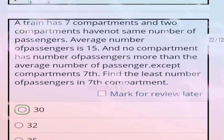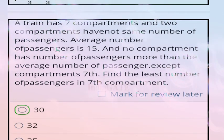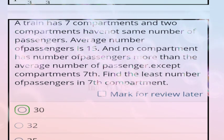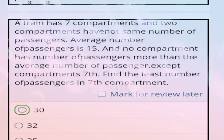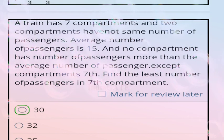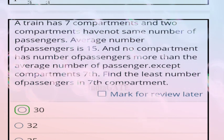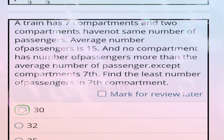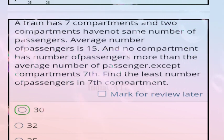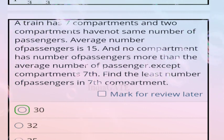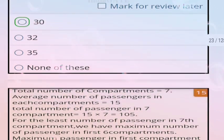Next question: a train has 7 compartments. Two compartments do not have the same number of passengers. Average number of passengers is 15. No compartment has more than average except the 7th. Find the least number of passengers in the 7th compartment. Correct answer is option A, 30.